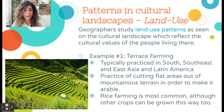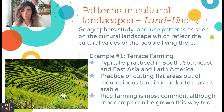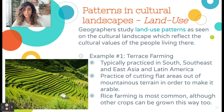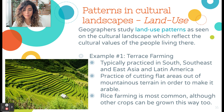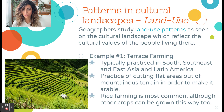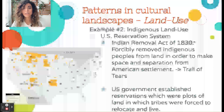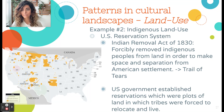Land use patterns are seen when the cultural landscape reflects the cultural values of the people living there. Terrace farming is one example, practiced in different parts of Asia and Latin America due to the geography. It involves cutting into steep mountainsides to create flat terraces for agriculture, making the land arable. We see this especially with rice farming. This is one way that cultural norms and values are reflected through land use.